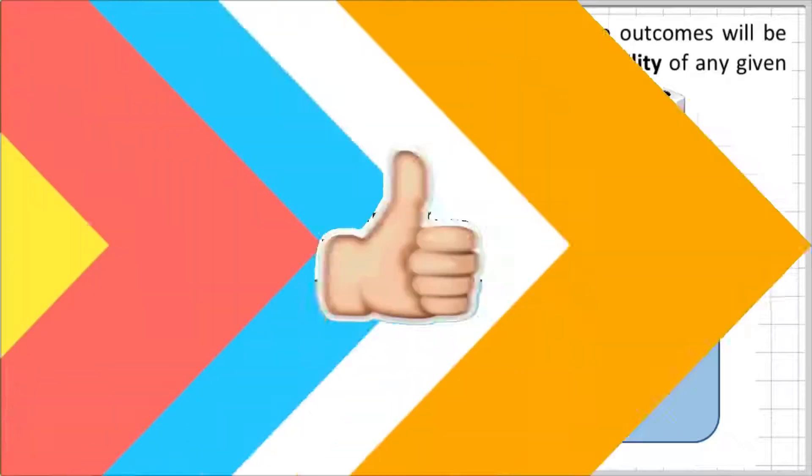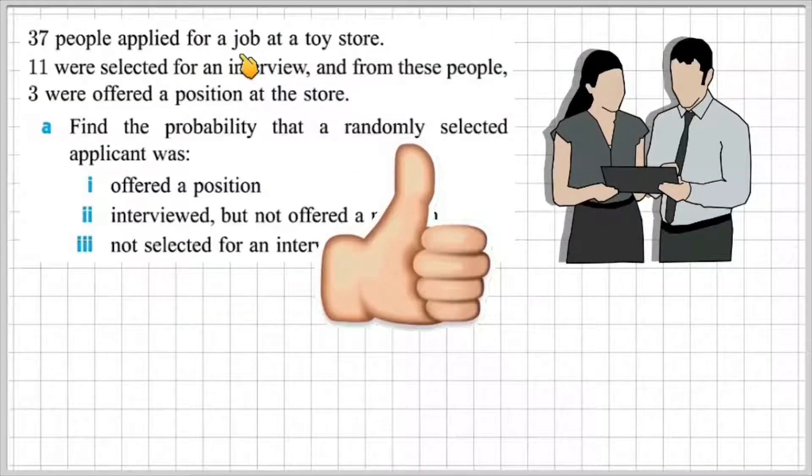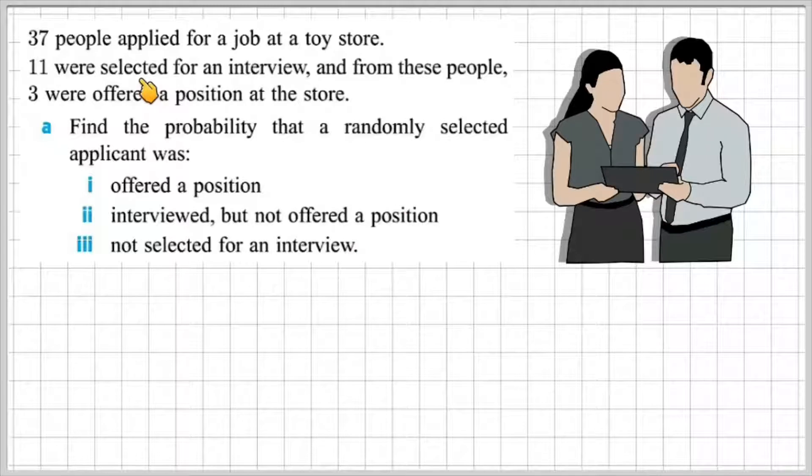Okay, let's crack on with an example. 37 people applied for a job at a toy store. 11 were selected for an interview and from these people, 3 were offered a position at the store. A. Find the probability that a randomly selected applicant was 1. Offered a position.